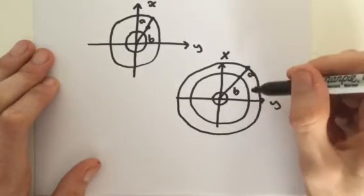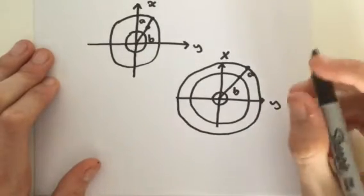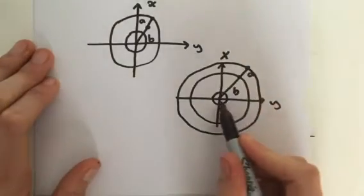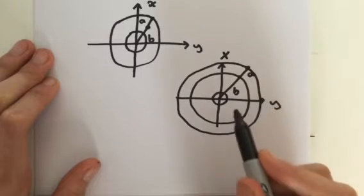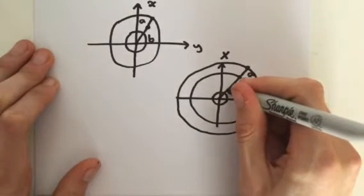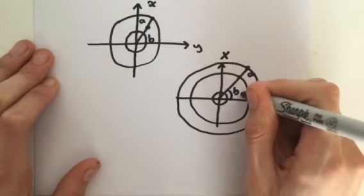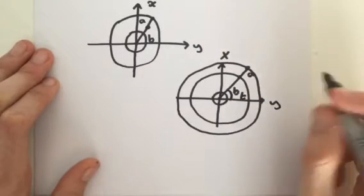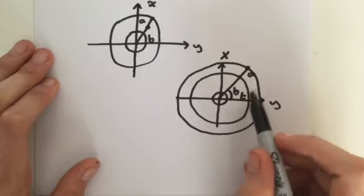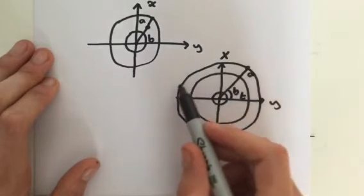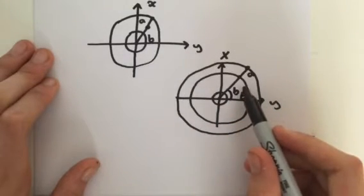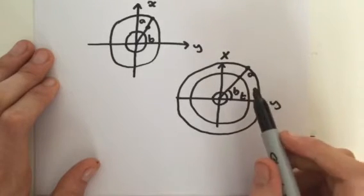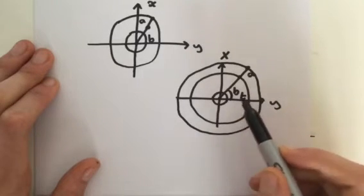On our x-y plane, radius b is at an angle to the y-axis. This angle is going to be our first variable, t. The angle t is going to vary as b sweeps out 2pi radians — that's our first variable, t.